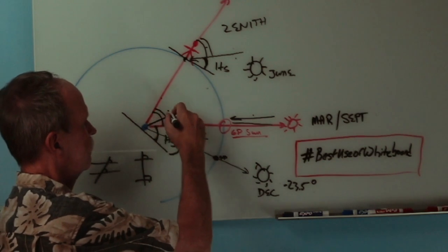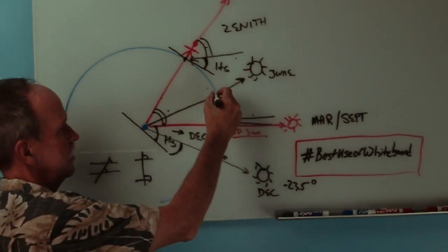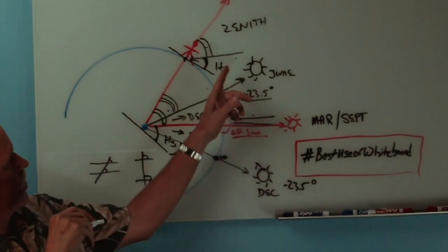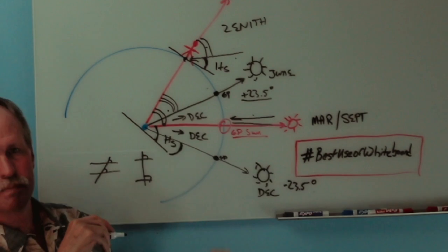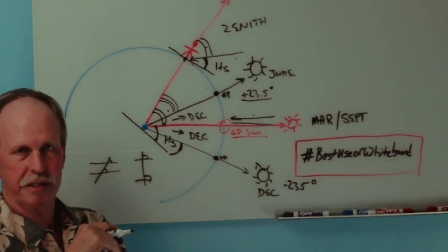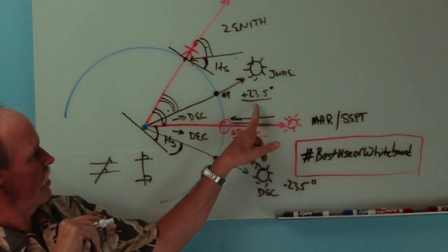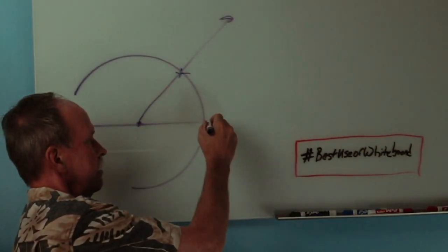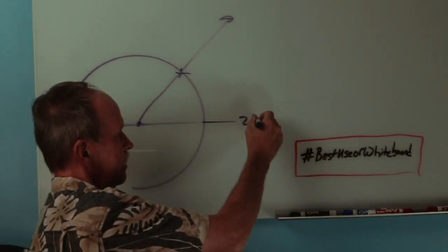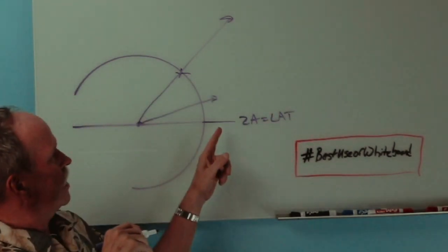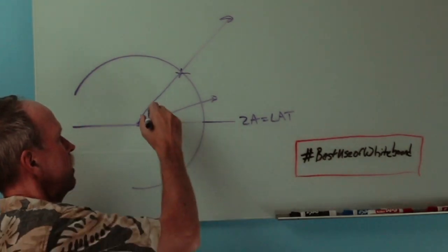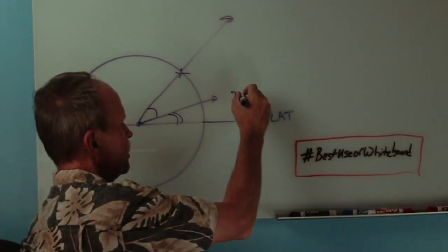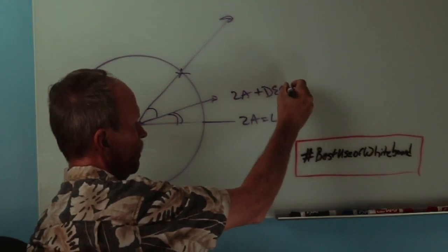Likewise, if the Sun is up here in June, and that's the new GP of the Sun, which is plus 23.5 degrees, what would we measure here? Well, our zenith angle would be 40 degrees minus 23.5. So, that would be 16.5 degrees. We'd have to add to that 16.5 degrees the declination, 23.5 degrees, and we would come up with 40. If the Sun is at the equator, the zenith angle equals latitude. If the Sun is closer to us than the equator, we're going to read this angle right here.